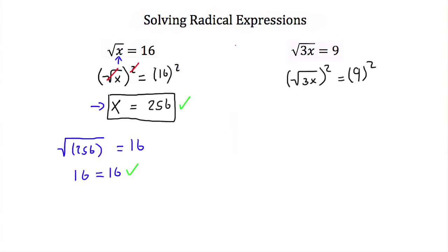On the left-hand side, the square root and square cancel, leaving just 3x. On the right-hand side, 9 squared is 81. So we have 3x is equal to 81. Dividing both sides by 3, we get x is equal to 27.